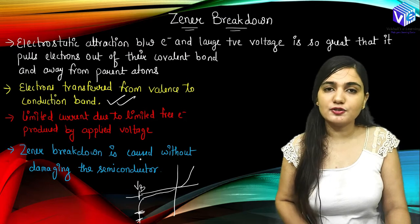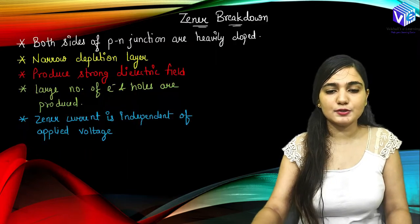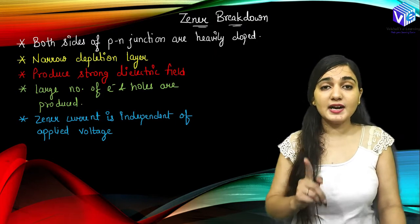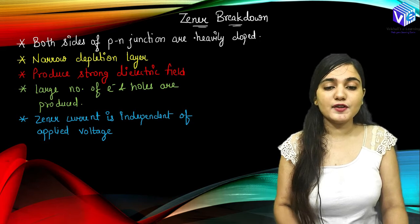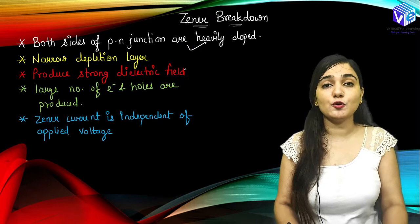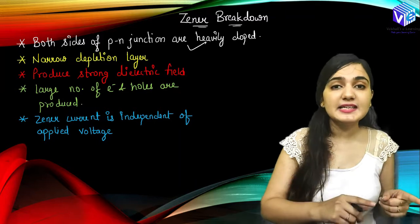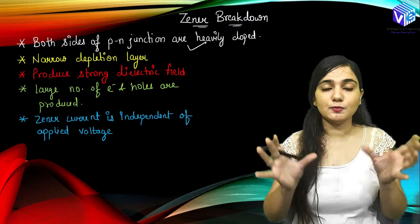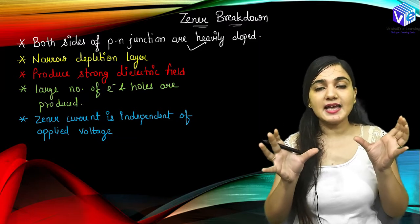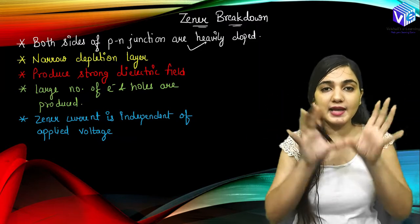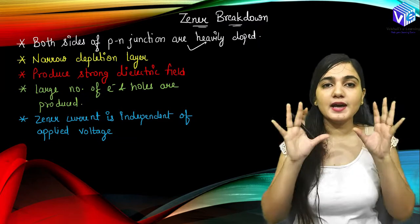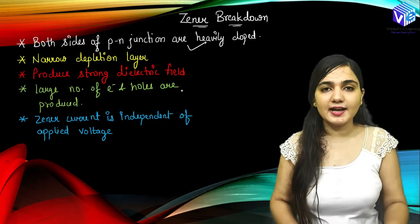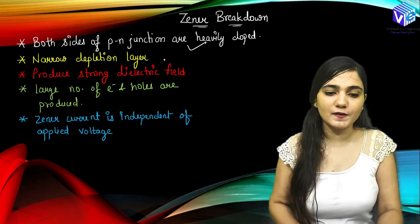So Zener breakdown is not going to damage our device. Now in Zener breakdown, one condition must be satisfied: both sides of the p-n junction must be heavily doped. So whenever making a Zener diode, both the p side as well as the n side must be very heavily doped. If the diode is made with heavily doped p and n sides, then it will be acting as a Zener diode. This is a must condition for the Zener diode.